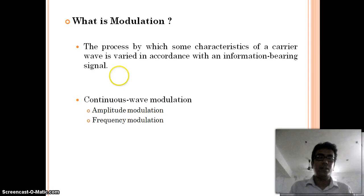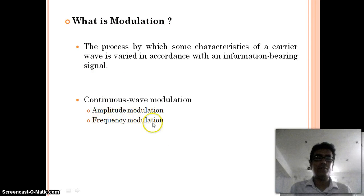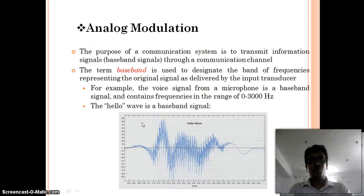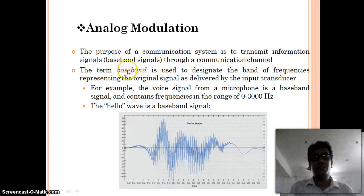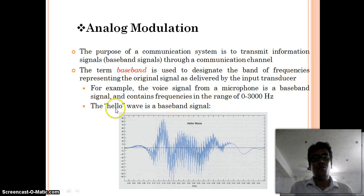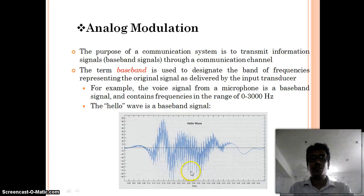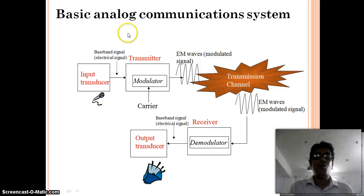There are two types of modulation techniques in continuous wave modulation. The first one is amplitude modulation and the next one is frequency modulation. Now we will see what is the baseband signal. The baseband signal is the information signal, or the modulating signal. Here we will see the term 'hello' — if we use 'hello,' then the signal will generate in the time axis. And here is the basic block diagram of an analog communication system.